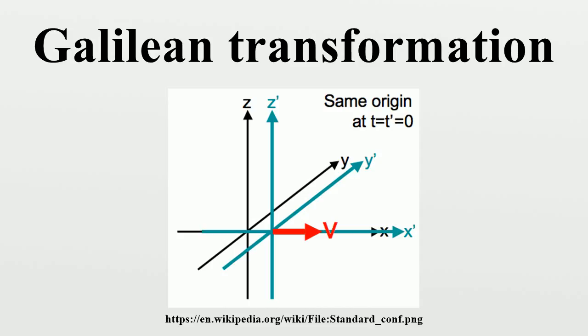As a Lie group, the Galilean transformations have ten dimensions. Two Galilean transformations composed to form a third Galilean transformation. The set of all Galilean transformations Gal on space forms a group with composition as the group operation.